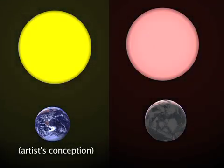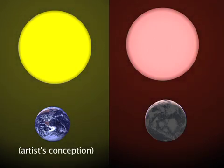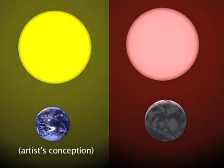The new planet receives 90% of the light that Earth receives. However, because most of its incoming light is in the infrared, a higher percentage of this incoming energy should be absorbed by the planet. When both these effects are taken into account, the planet is expected to absorb about the same amount of energy from its star that the Earth absorbs from the sun.